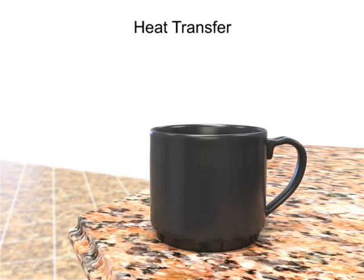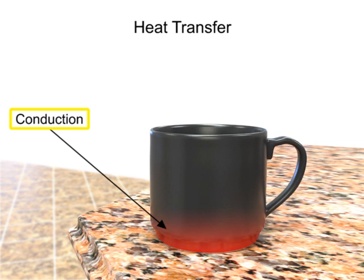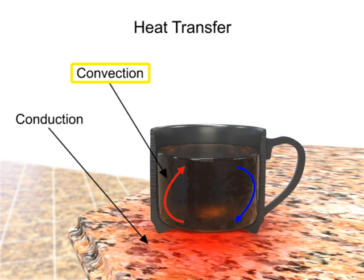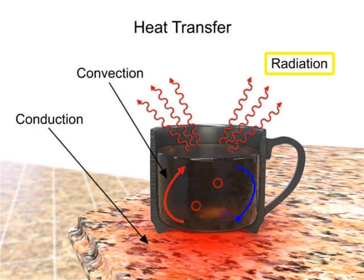The process of heat transfer also occurs when an object cools. If a mug of hot coffee is left standing on a cold kitchen countertop, its temperature will gradually decrease as heat is lost. The heat energy dissipates by conduction through the mug to the tabletop, by convection as the liquid rises, cools, and sinks, and by the radiation of heat into the surrounding air.